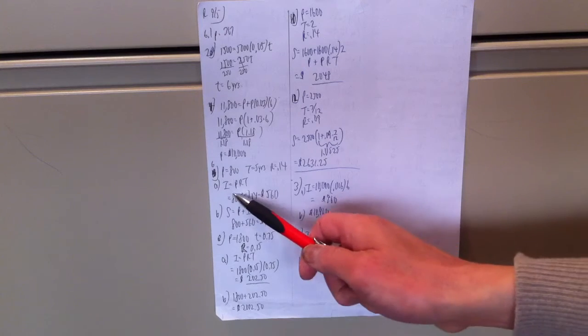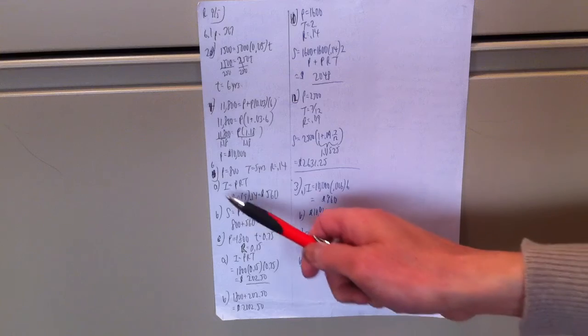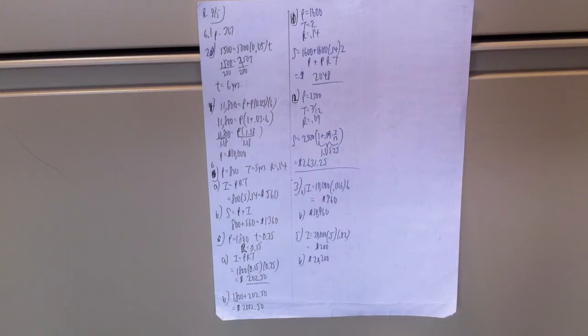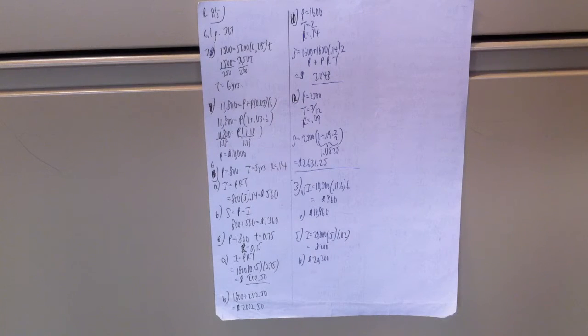Number 6, you're given a principal of 800 times 5 years. Rate is 14% or 0.14. Interest equals PRT. 800 times 5 times 0.14 is equal to 560.